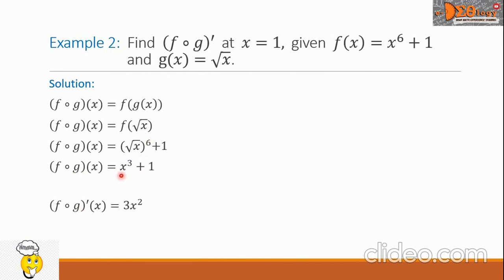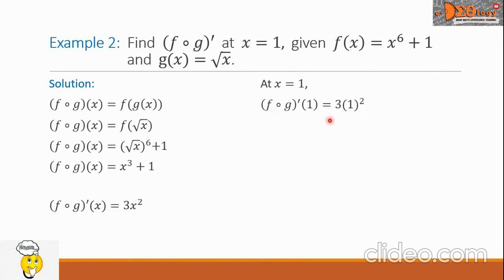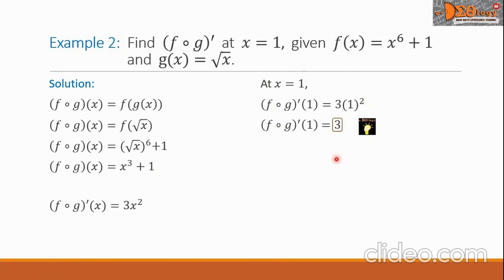So f composite g prime of x equals 3x squared. This is the derivative of the polynomial function. At x equals 1, f composite g prime of 1 equals 3 times 1 squared, which equals 3. This is our final answer.